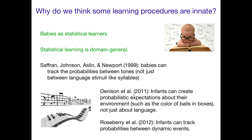They're still counting things, using probabilities. They can track probabilities between events — that's really not language-related at all. So statistical learning, counting things and updating your hypotheses by learning from those counts, is something you can do across different cognitive domains.